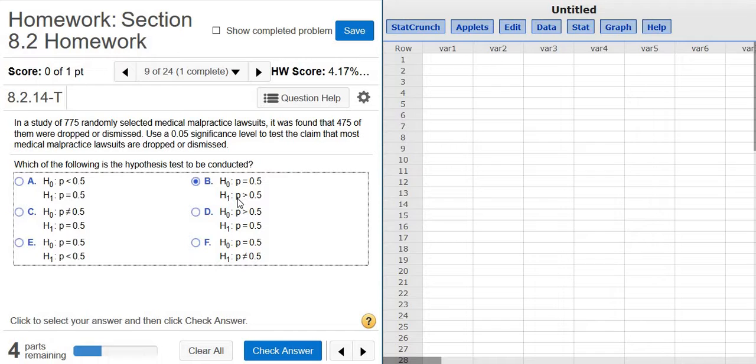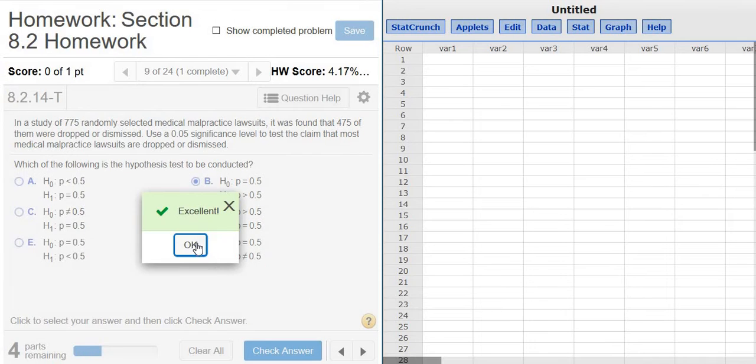See, H1 is usually your question. So P is the proportion of lawsuits that are dropped or dismissed. You want it to be more than 50%. So that's that one there.